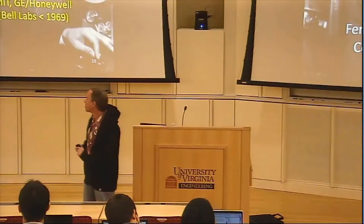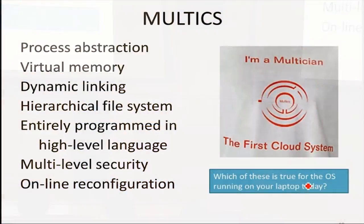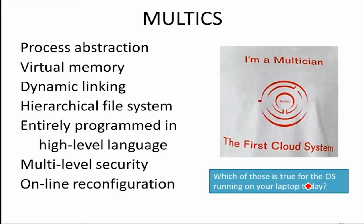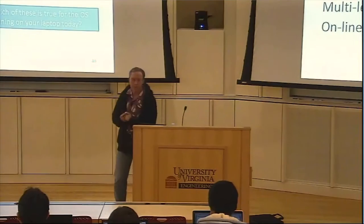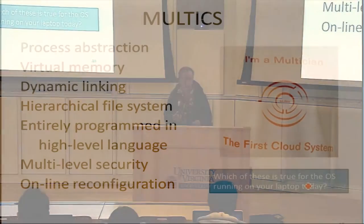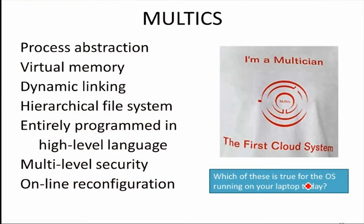If you looked at what Multics was able to do in the 60s, you had an operating system that provided a process abstraction. You had virtual memory, so you had isolation of each process and you could write your programs with a nice clean memory model. You had dynamic linking so you could combine programs and access other programs. You had a hierarchical file system similar to what we have in Unix. It was entirely programmed in a high-level language, and offered a very strong notion of security as well as a way to reconfigure itself.